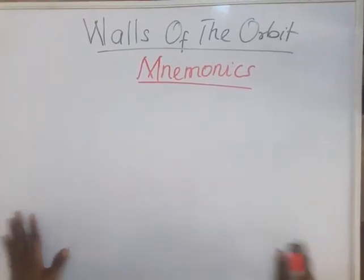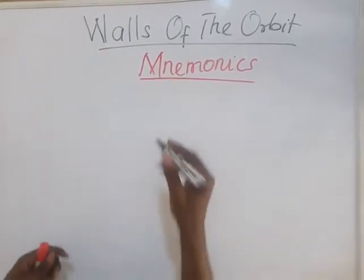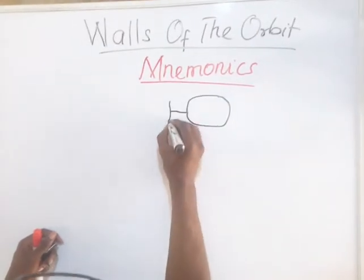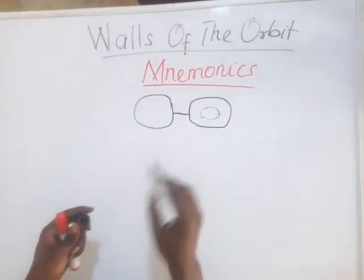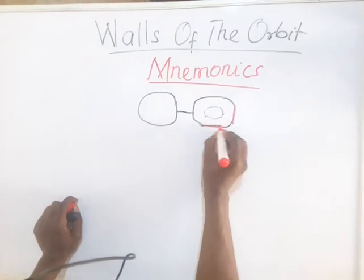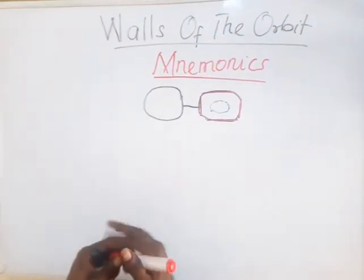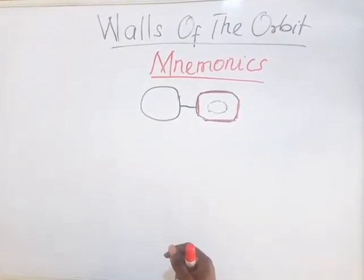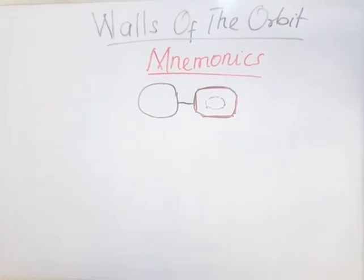Alright, here is a very simple mnemonic for you to remember the bones forming the walls of the orbit. The orbit has four walls: the roof up top, the floor down below, the medial wall on the side close to the nose, and the lateral wall on the far side away from the nose.